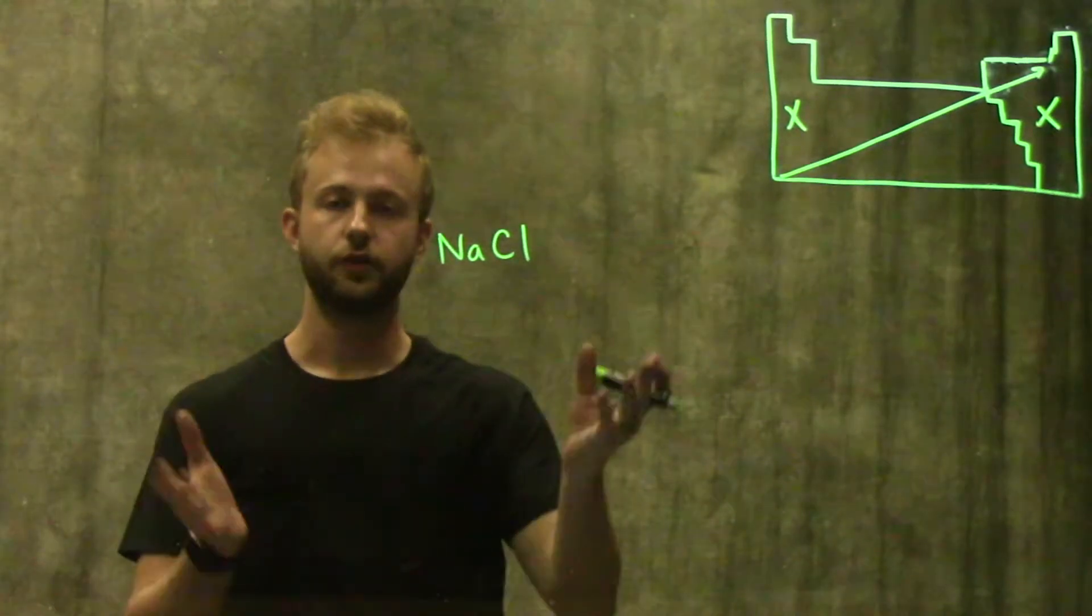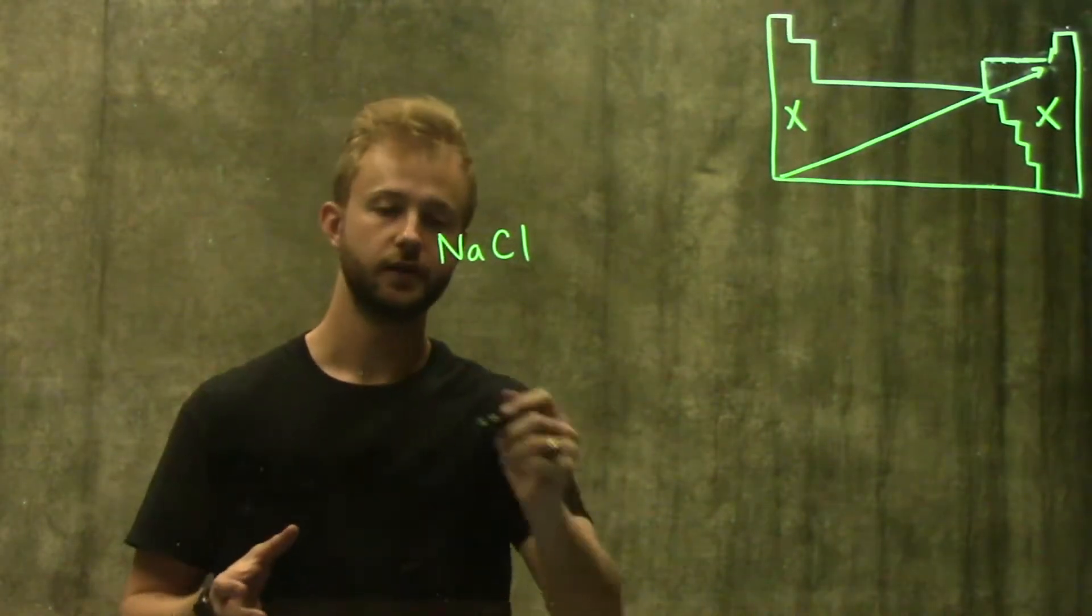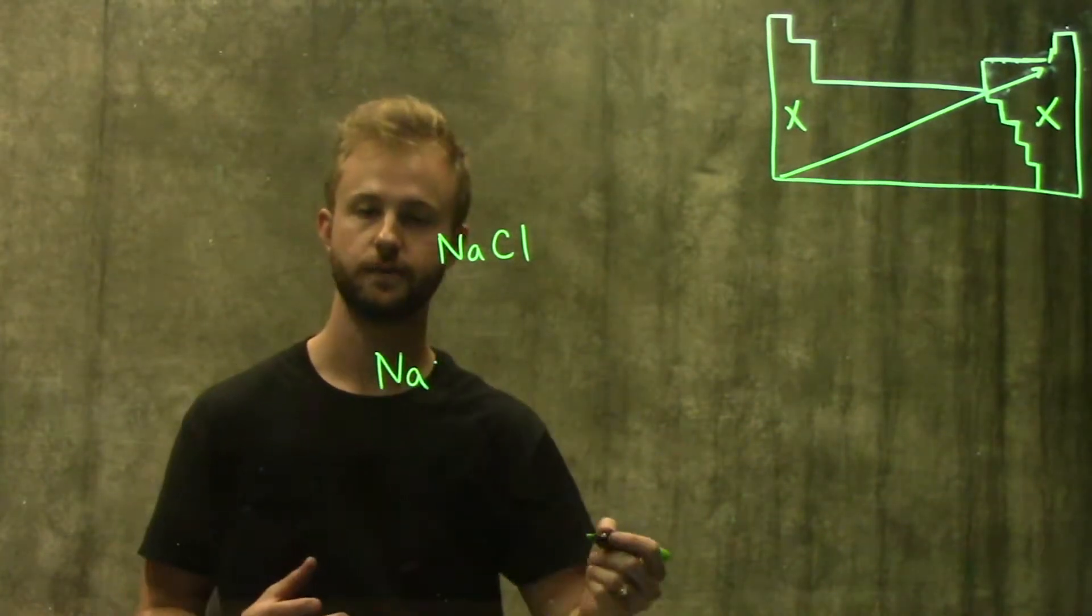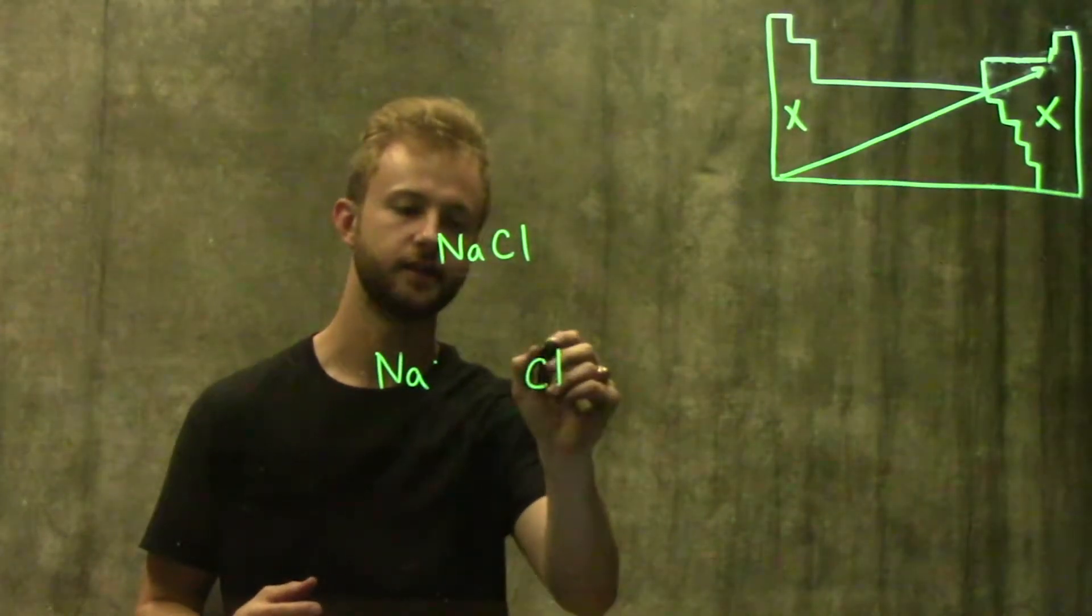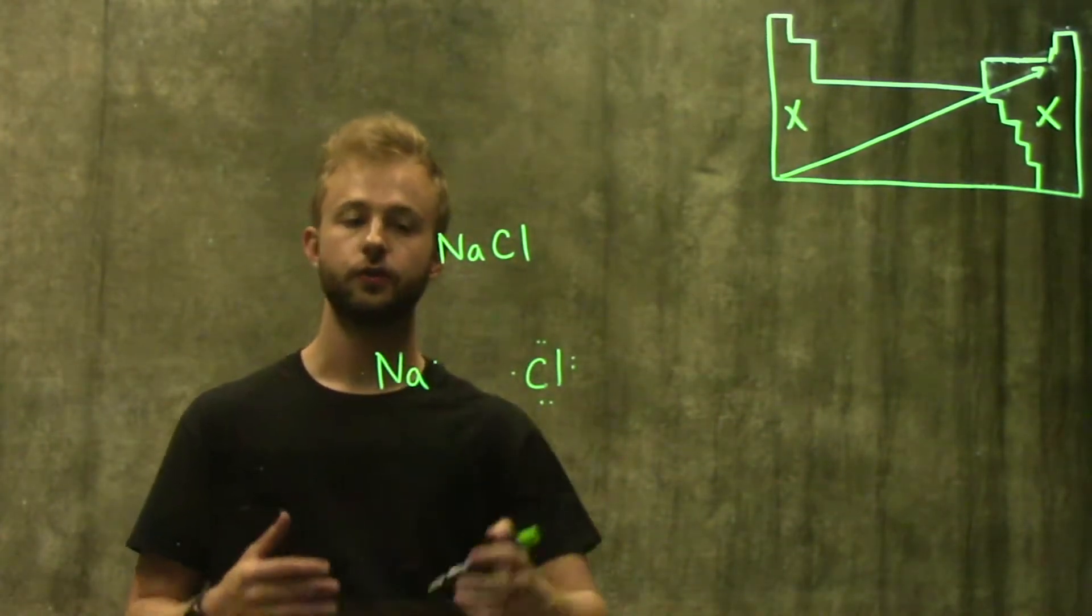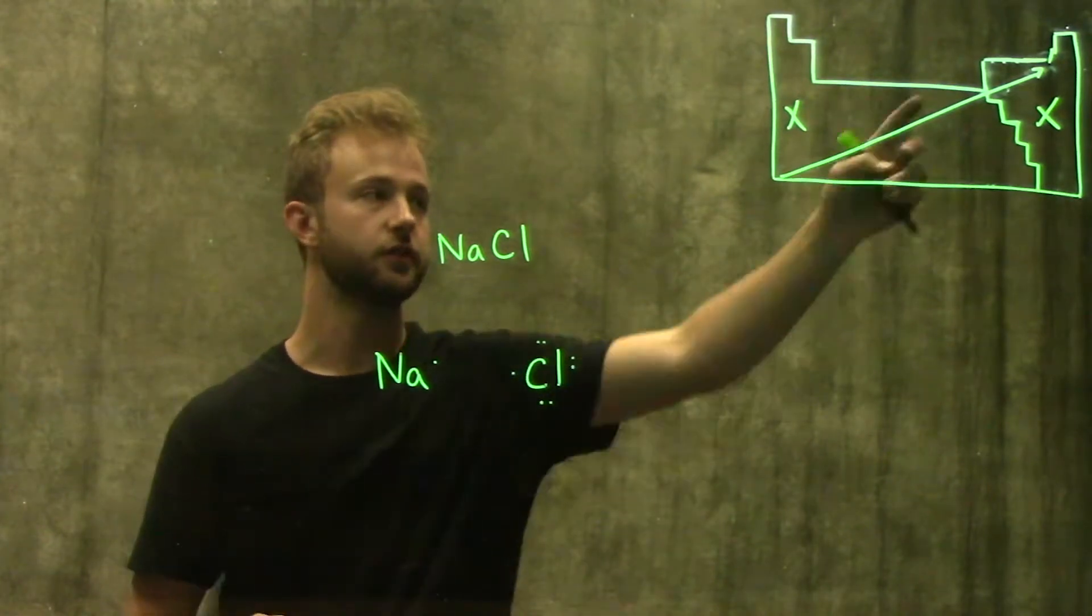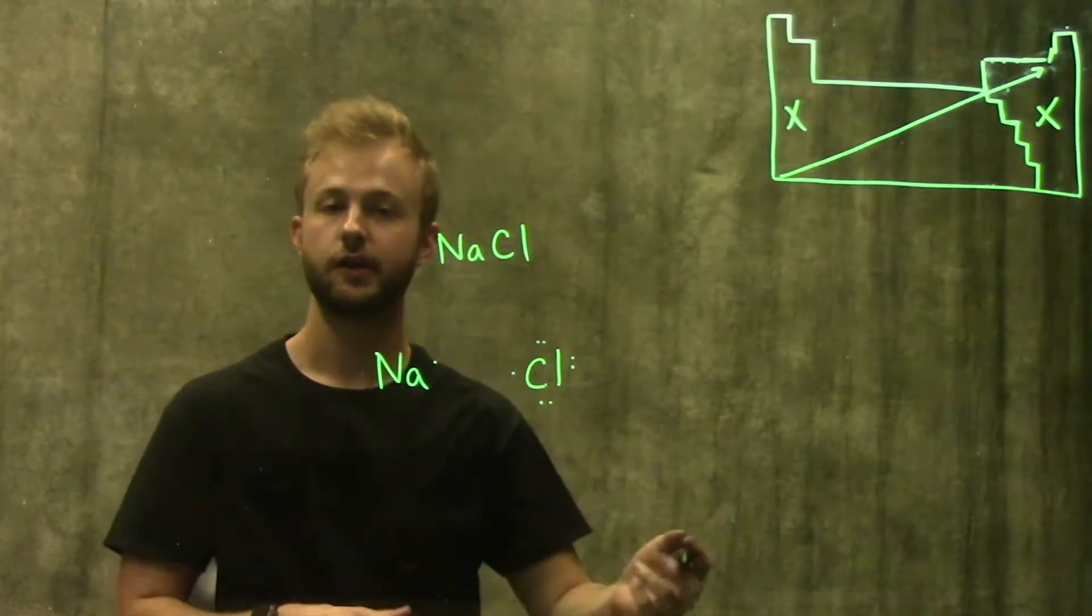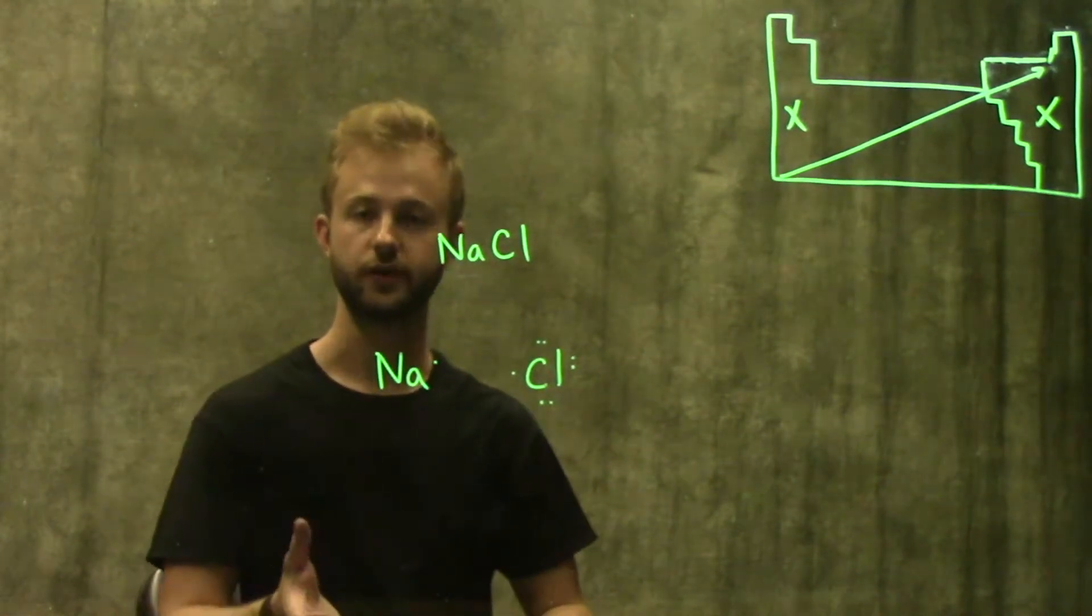The way that this bond is actually formed is sodium has one valence electron and chlorine has seven. The electronegativity for chlorine, since it's found about right here on the periodic table, is going to be much higher than the electronegativity for sodium.